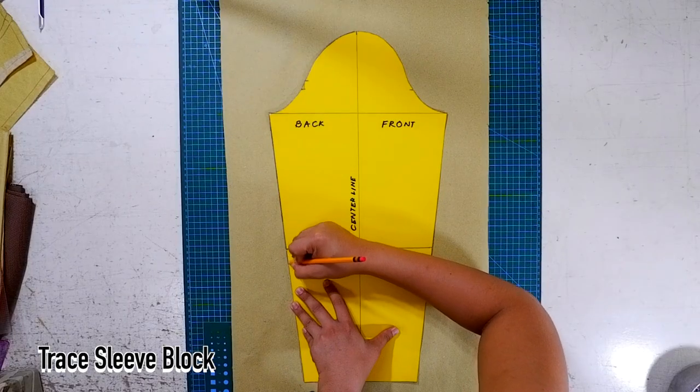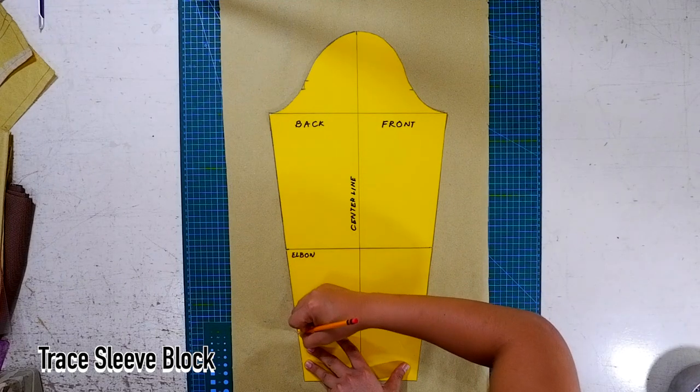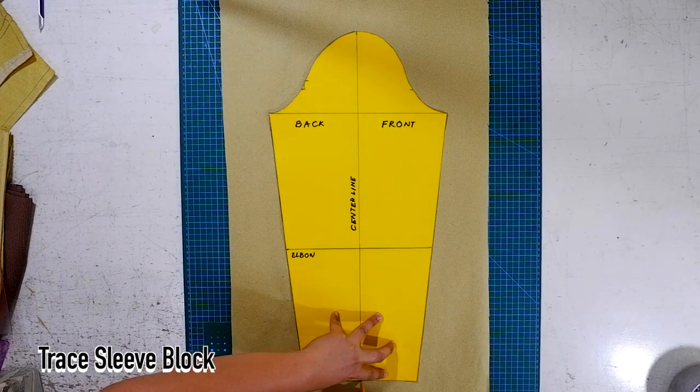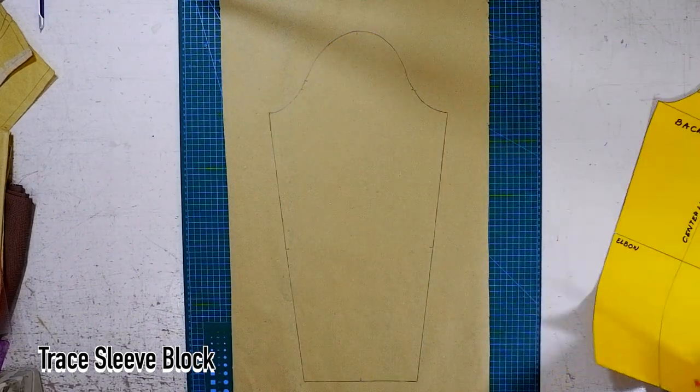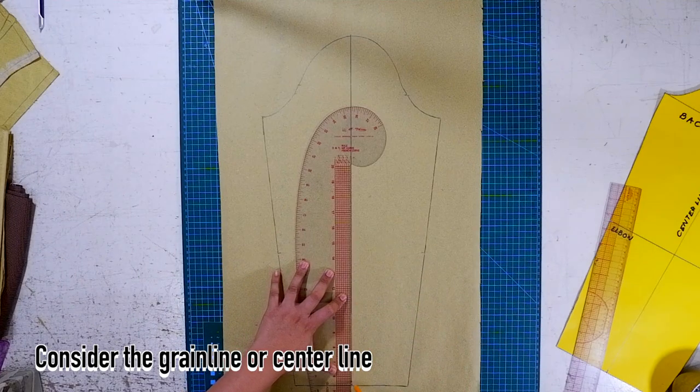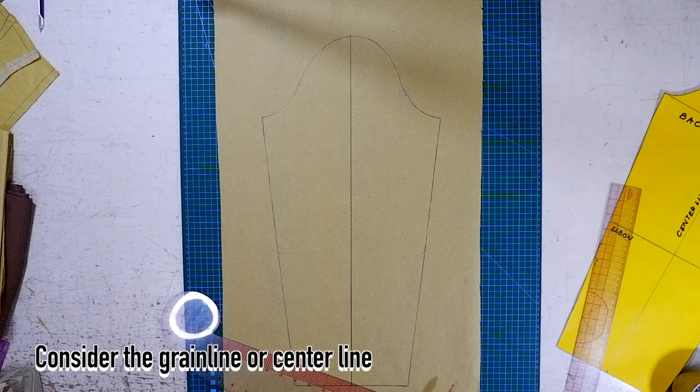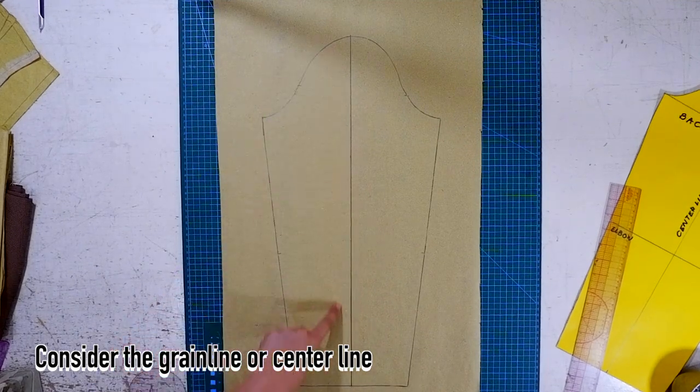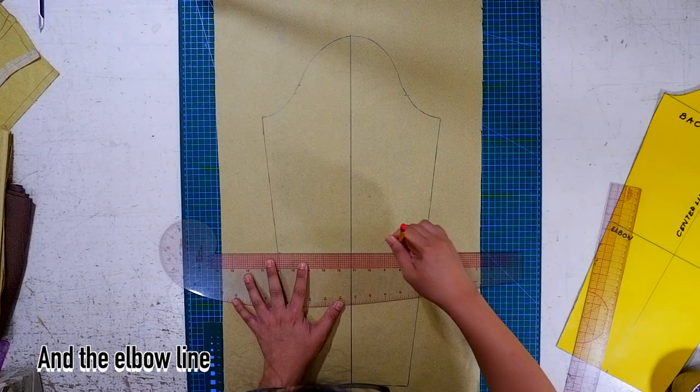To start off our pattern, let's first trace our sleeve block on a pattern paper. Don't forget to consider the center line or the grain line. We will need this for the whole pattern drafting process and of course, the elbow line.